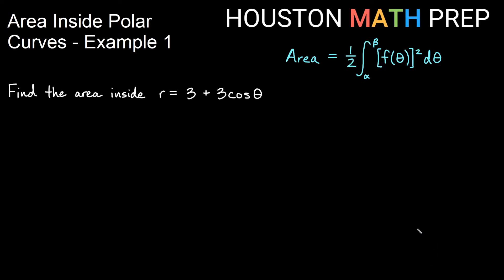Welcome back everyone to our first example for area inside polar with integrals. We want to find the area inside of r equals 3 plus 3 cosine theta.